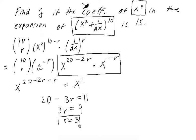Now that we've solved for r, we can plug r is 3 into the equation. So what we have now is 10 choose 3, x squared to the 10 minus 3, times ax to the negative 3. And we can simplify this.